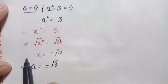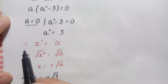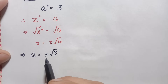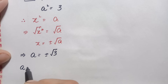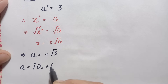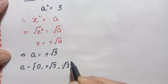Finally, we have three possible values of a: a is equal to 0, a is equal to positive square root of 3, and a is equal to negative square root of 3. So we have three solutions.